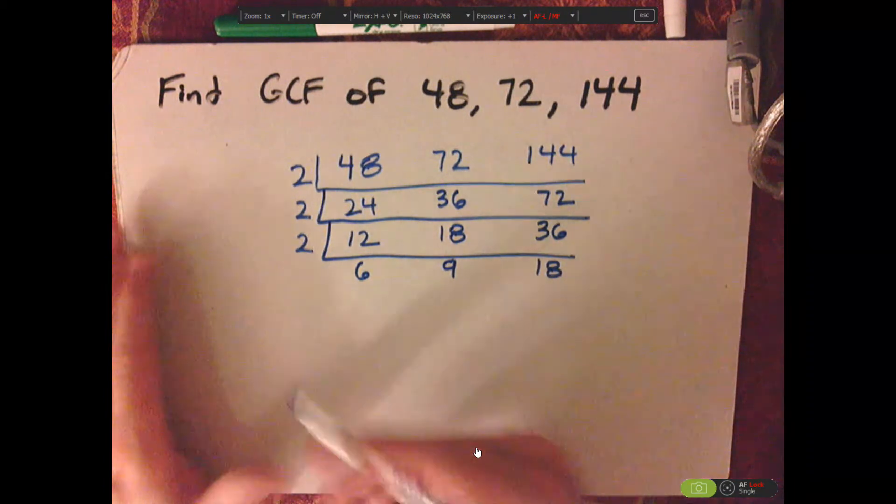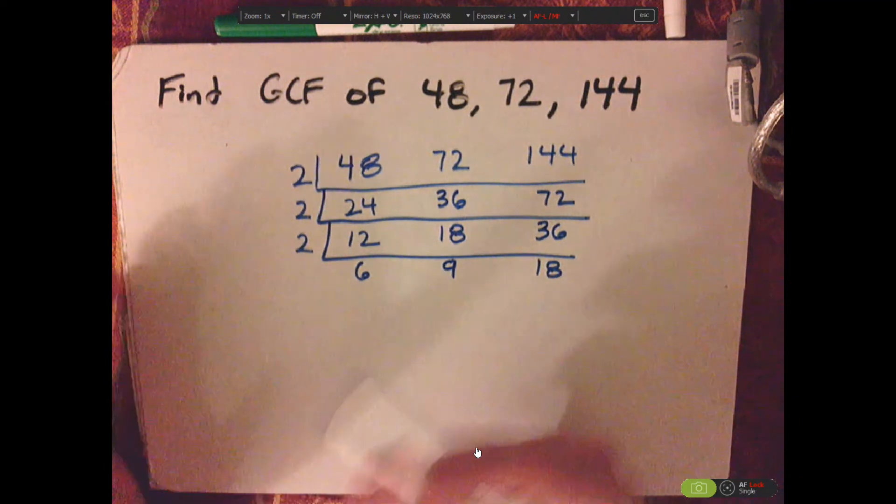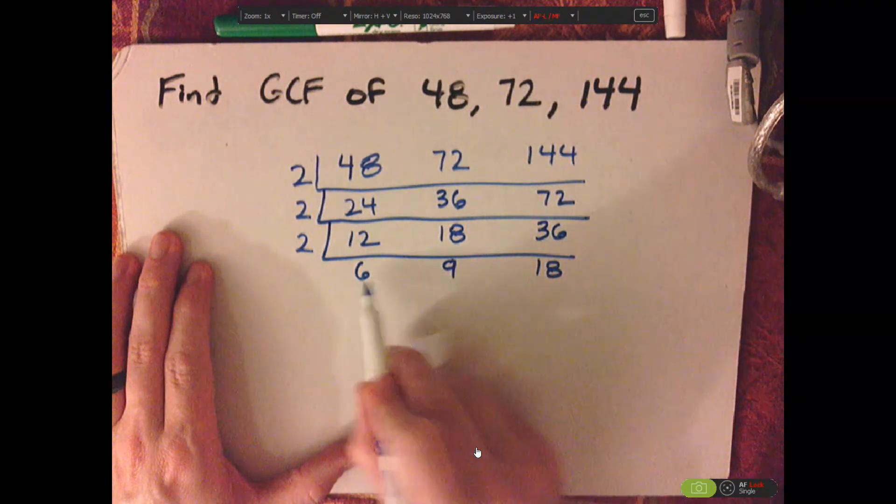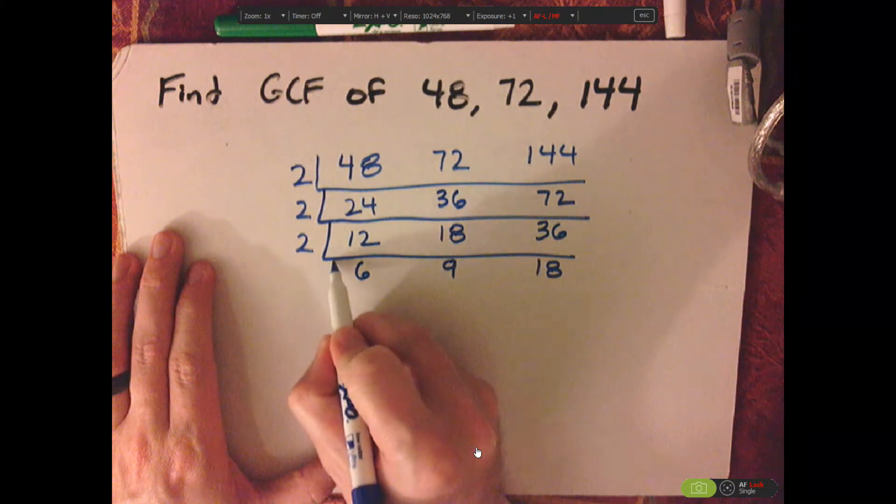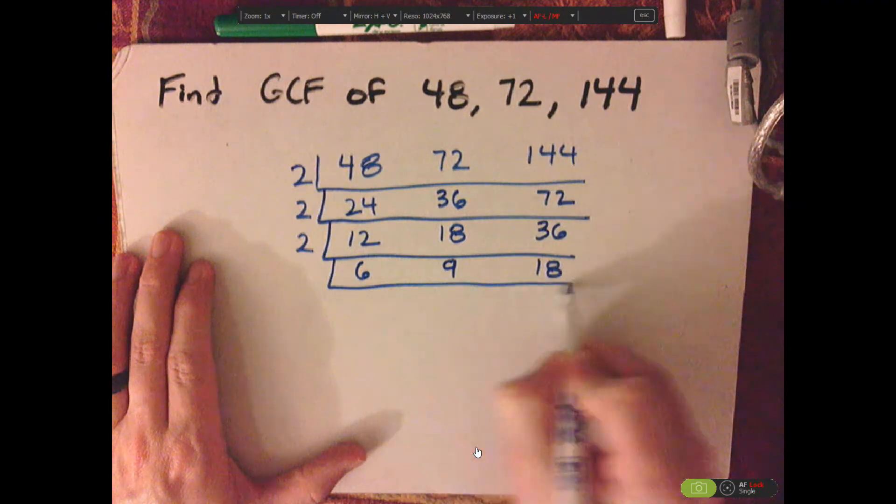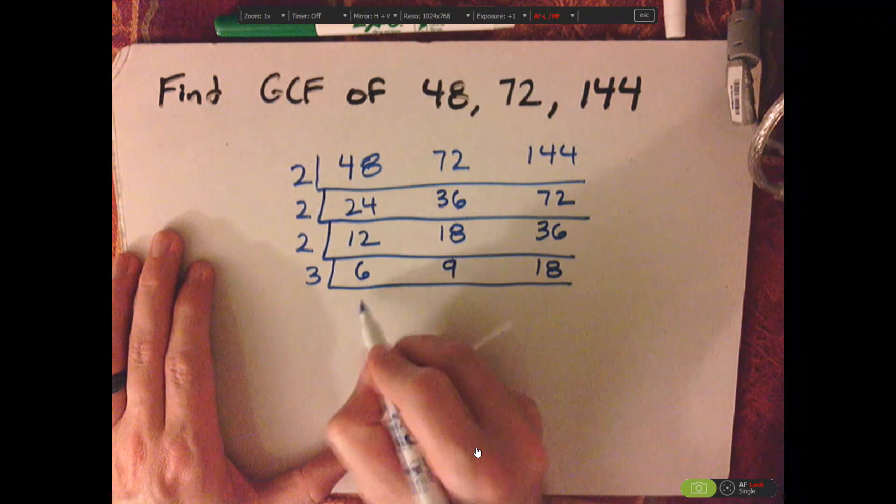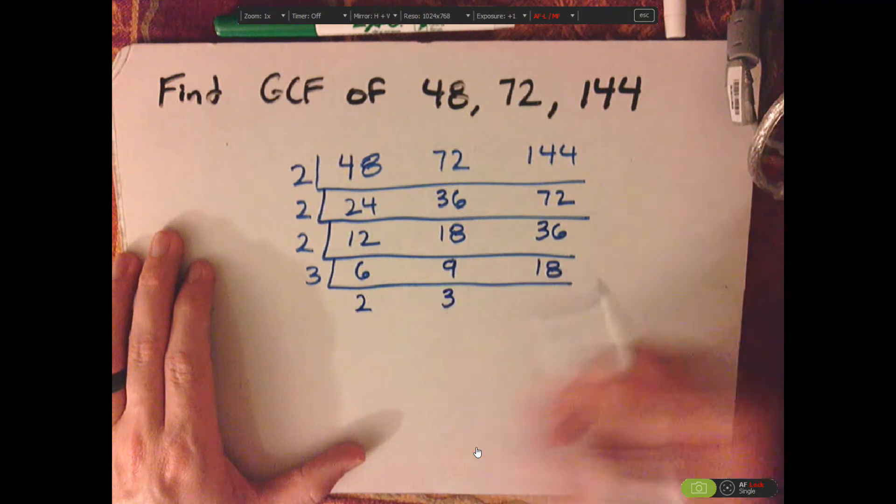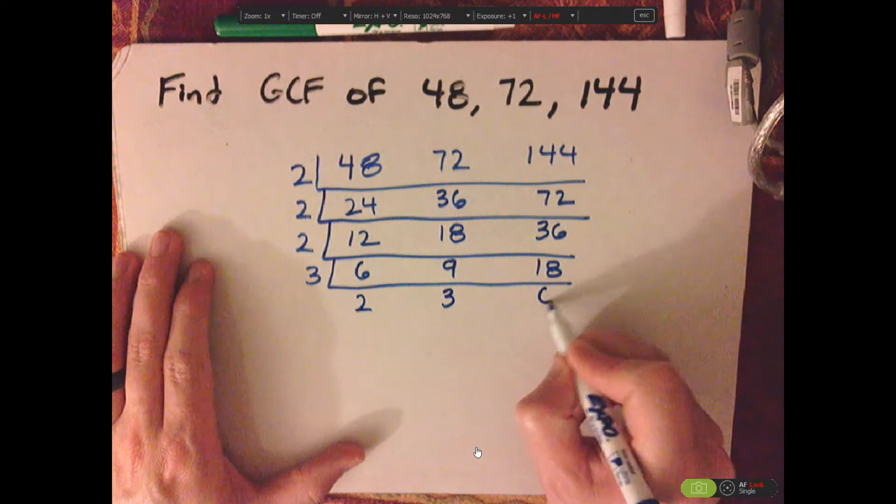So you keep on dividing until you can't find any more common factors. So here, three goes into six twice, three goes into nine three times, and then three goes into 18 six times.